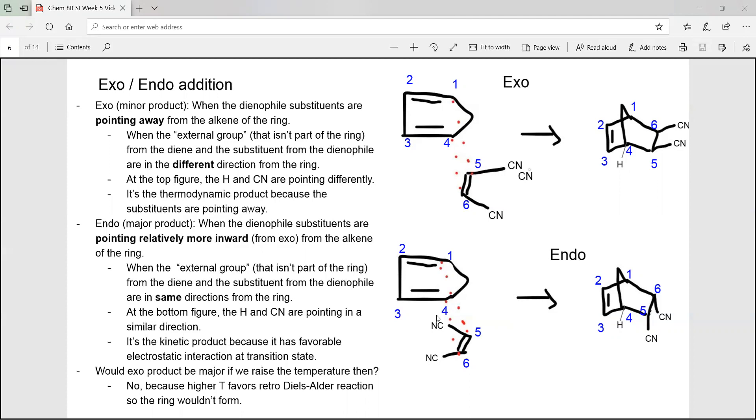So recall that thermodynamic product is favored at a higher temperature. So would the exo product be favored at a higher temperature? No, it wouldn't because higher temperature favors retro Diels-Alder reaction, so the ring wouldn't form.